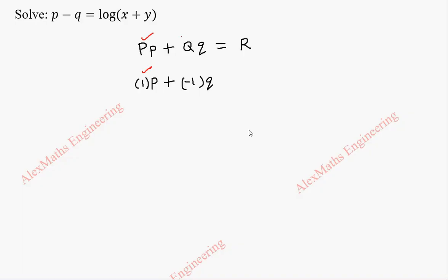So that by comparison capital Q is minus 1 and on the other side we have log of x plus y. Now let's take capital P as 1, capital Q as minus 1 and capital R as log of x plus y.